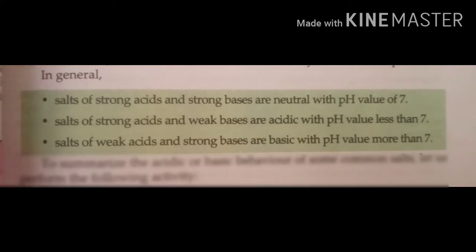In general, salts of strong acids and strong bases are neutral with pH value of 7, as strong acids and bases neutralize each other completely to form a neutral salt and water. Salts of strong acids and weak bases are acidic with pH value of less than 7, as the acid does not get neutralized completely, so the salts obtained are slightly acidic in nature. Salts of weak acids and strong bases are basic with pH value of more than 7, as the base does not get neutralized completely, so the salts obtained are basic.